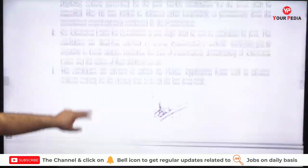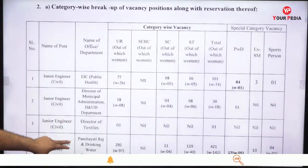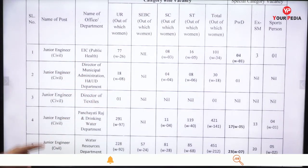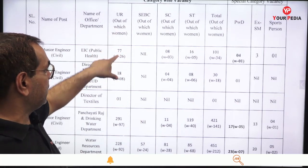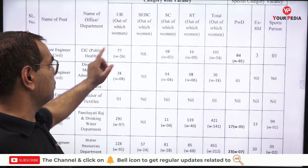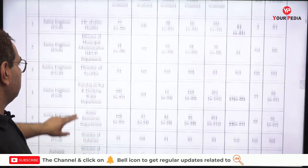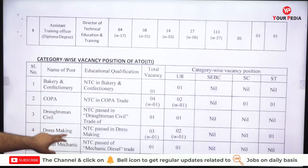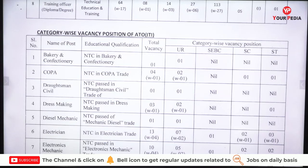Other important information: the age limit is mainly 38 years, which you can check in detail for different vacancies. Category-wise breakup of different seats is also available. For example, for Junior Engineer Civil under the Public Health Department, there are 77 seats in the unreserved category, with boom and grade 26, and vacancies across different categories are listed.